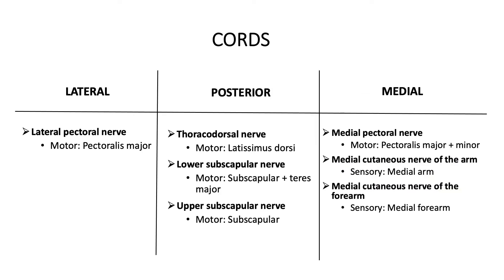Most of these are pure motor nerves, with the exception of the two nerves which have the word cutaneous in their name. From the lateral cord, the lateral pectoral nerve innervates pectoralis major. From the posterior cord: the thoracodorsal nerve innervates latissimus dorsi, the lower subscapular nerve innervates subscapularis and teres major, and the upper subscapular nerve innervates subscapularis. From the medial cord: the medial pectoral nerve supplies pectoralis major and pectoralis minor, and the medial cutaneous nerve of the arm supplies sensation over the medial aspect of the arm.